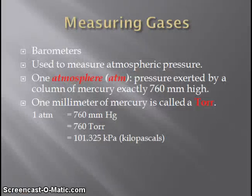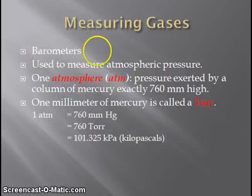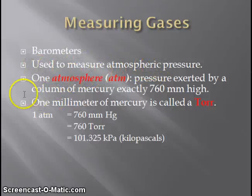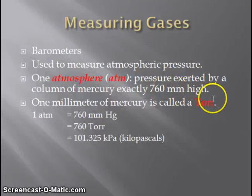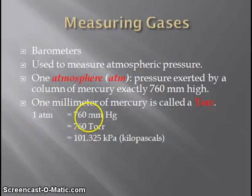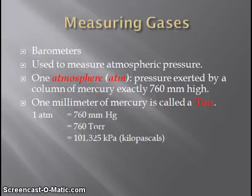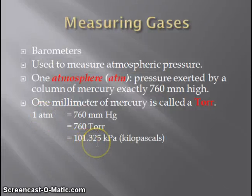Let's talk about how we measure gases. One of the most important measurements is pressure. A barometer is a tool used to measure gas pressure — specifically atmospheric pressure. A common unit is the atmosphere, or ATM, which is the pressure exerted by a column of mercury exactly 760 millimeters high. One atmosphere is equivalent to 760 millimeters of mercury, also called 760 torr. Another unit is kilopascals — one atmosphere equals 101.325 kilopascals.